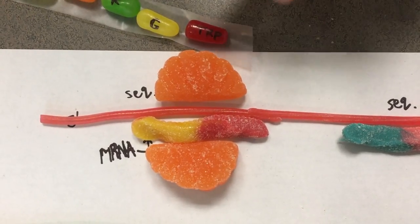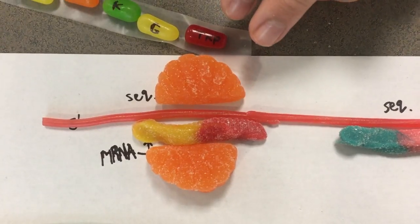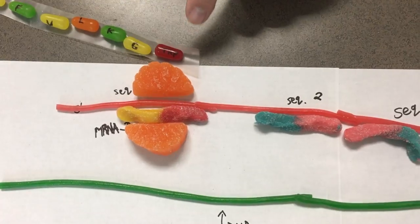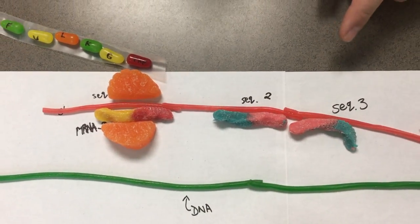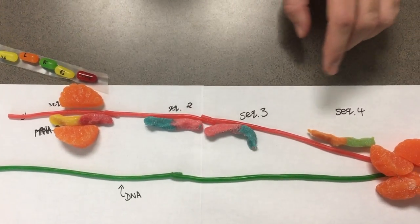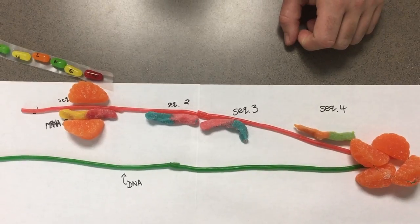When concentrations of tryptophan are low, the ribosome stalls at the 2 tryptophan codons in the leader peptide. This allows for sequence 2 to freely pair with the newly transcribed sequence 3, and transcription can continue and not attenuate. This allows for transcription to continue and attenuation to not occur.